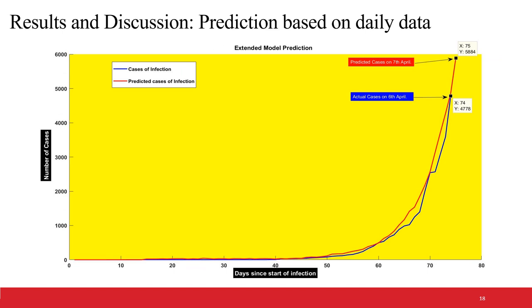This graph shows the prediction of COVID-19 using daily confirmed case data available for India. As we can see on 6th April, the prediction curve and the actual data curve are very close. On the basis of data available till 6th April, the number of cases on 7th April is predicted to be 5,884.